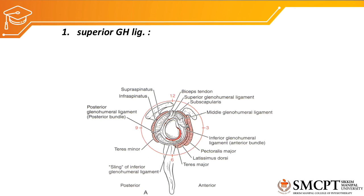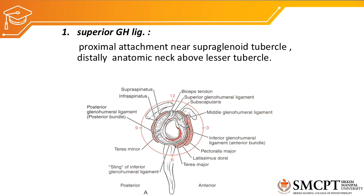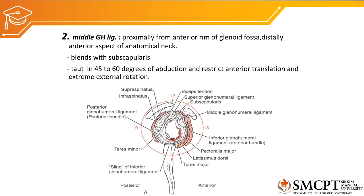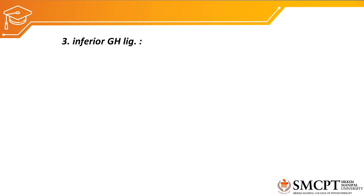Next are the glenohumeral ligaments. The superior glenohumeral ligament attaches proximally near the supraglenoid tubercle and distally to the anatomical neck just above the lesser tubercle. It becomes taut during full adduction, preventing inferior translation of the humeral head. The middle glenohumeral ligament attaches from the anterior rim of the glenoid fossa to the anterior aspect of the anatomical neck. It blends with the subscapularis muscle and is taut at 45 to 60 degrees of abduction, restricting anterior translation and extreme external rotation.